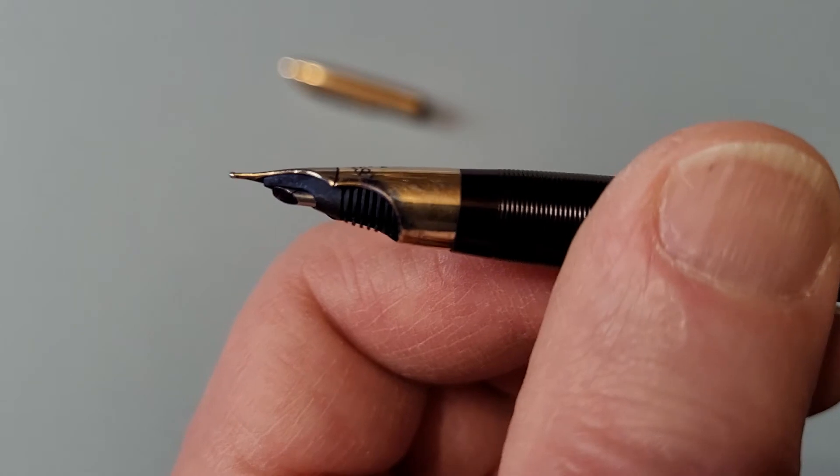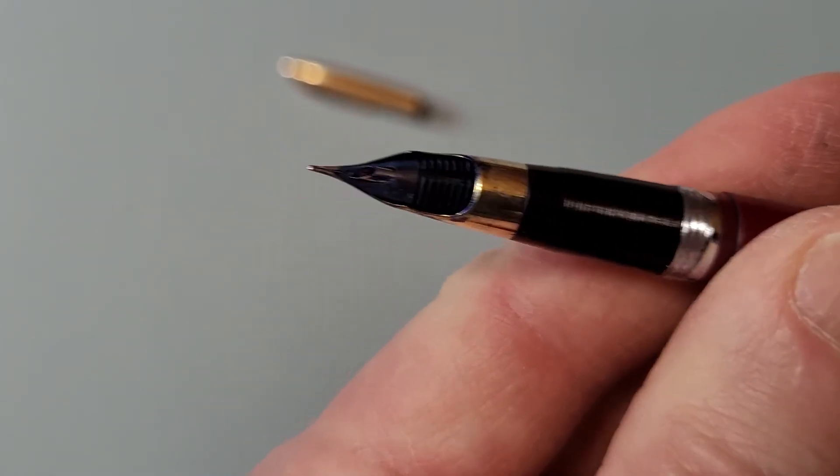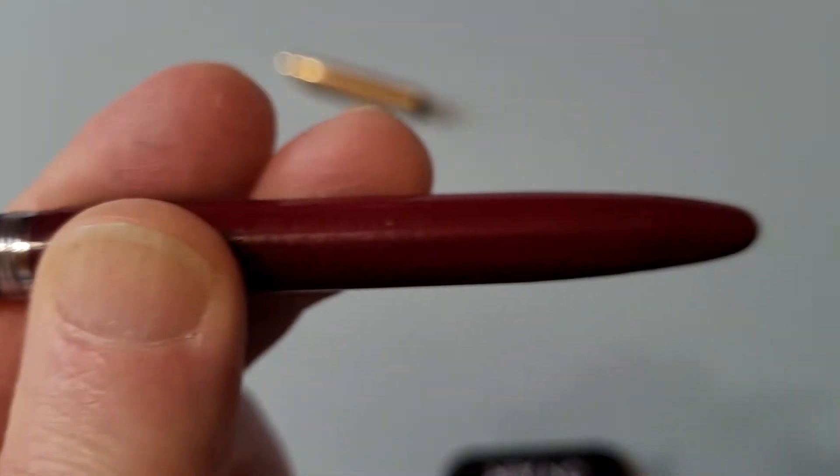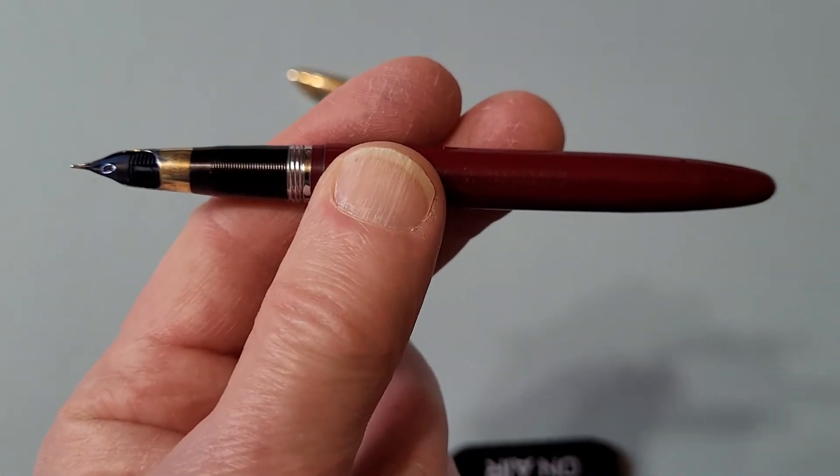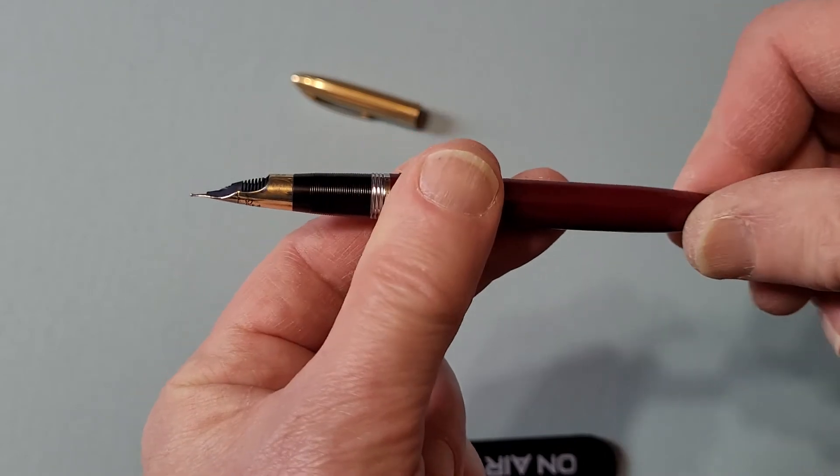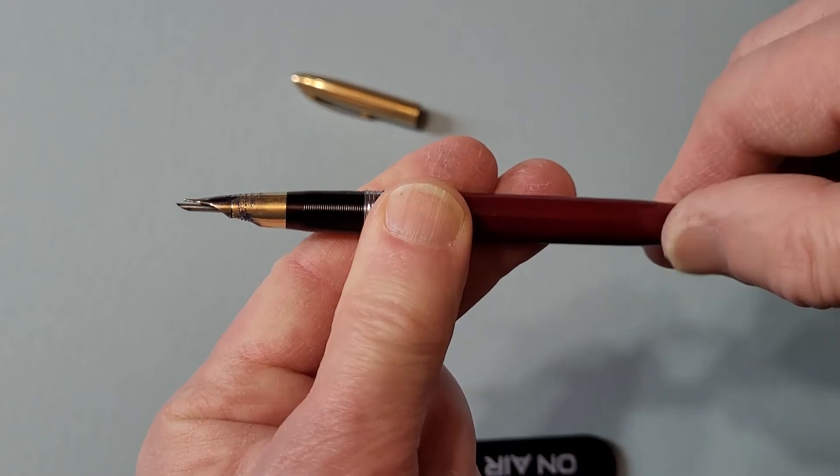It has a plastic feed. And as you turn it over, you can see where the Snorkel is, right? And as you turn a knob at the end of the pen, there's a little piston knob here. And as you turn that, what will happen, as you can see, you turn the knob, the Snorkel comes out.